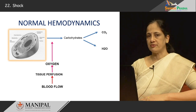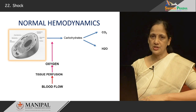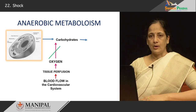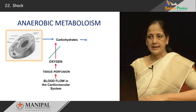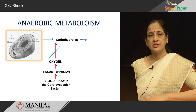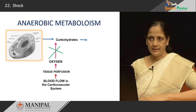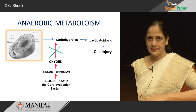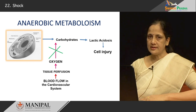Tissue perfusion is determined by the blood flow to a given tissue or organ. If this oxygen supply is not present, the initial aerobic metabolism will transform into anaerobic metabolism, wherein carbohydrates are converted to lactic acid. This results in acidosis with a drop in pH at the cellular level, and cell injury results.